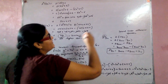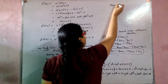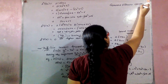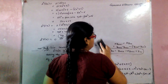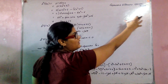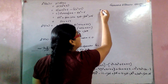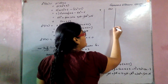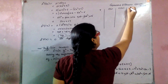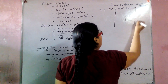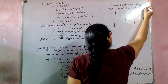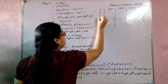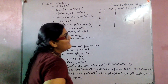Now we build the forward difference operator table. Listen carefully: we take the values of x as x₀, x₁, x₂, etc., then the values of f(x), then del f(x), and the higher order derivatives. The arguments (values of x) are: 0, 2, 4, 6, 8, 10. Now find the values of f(x) by substituting each.